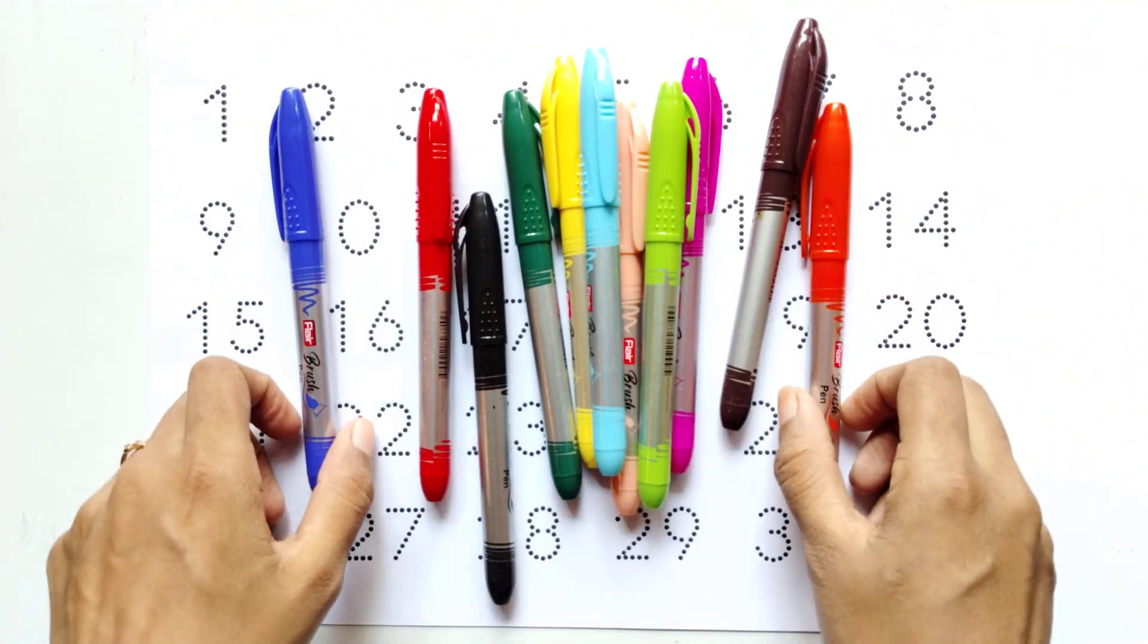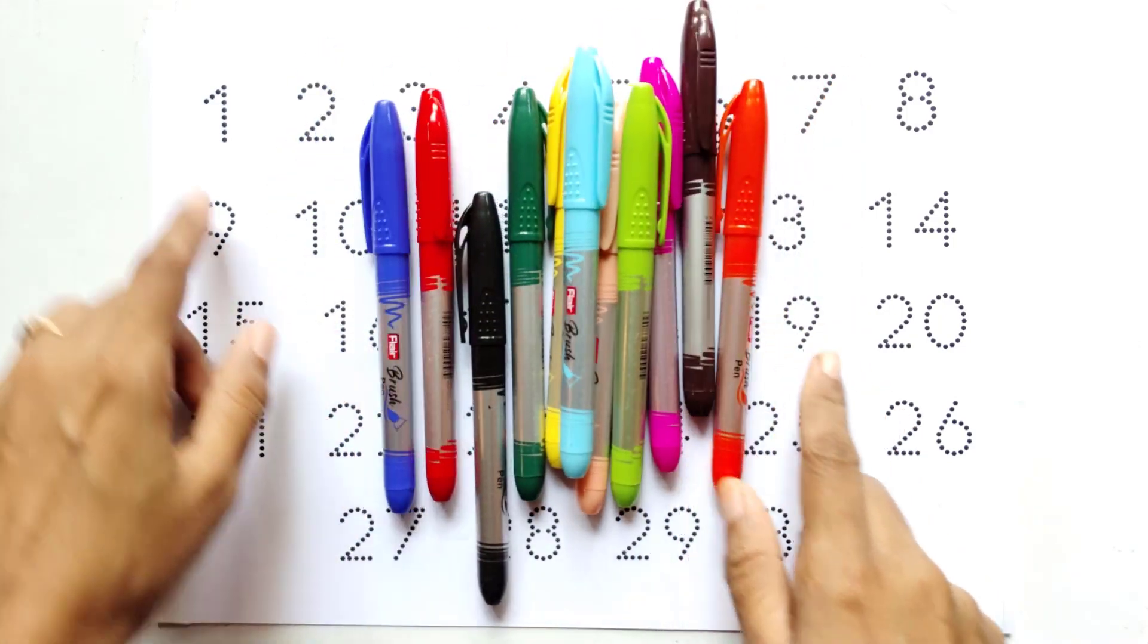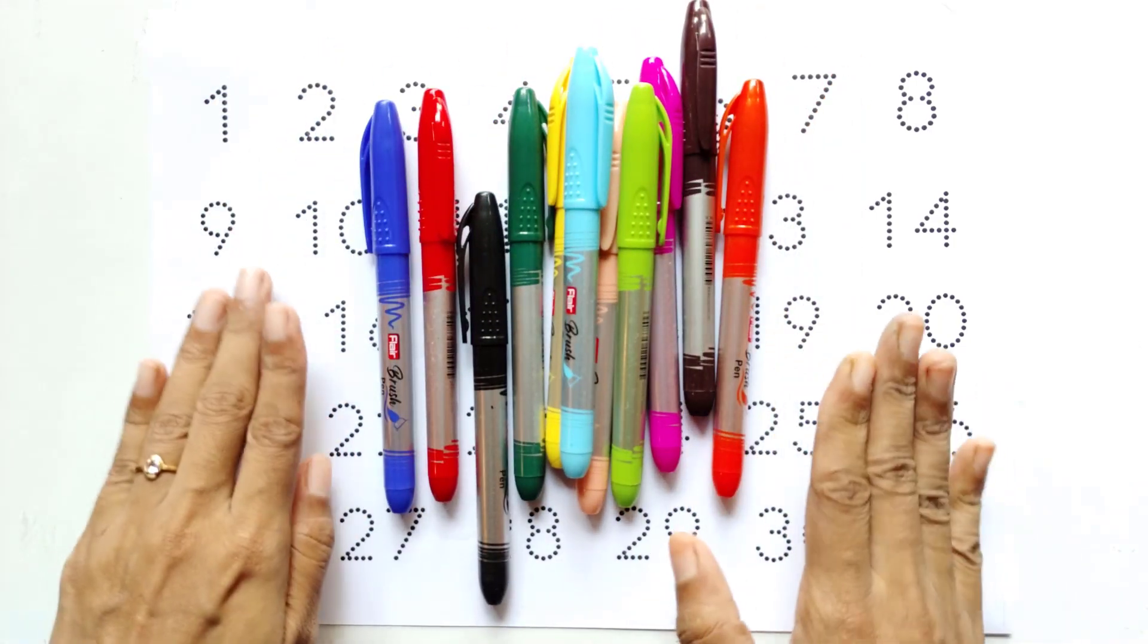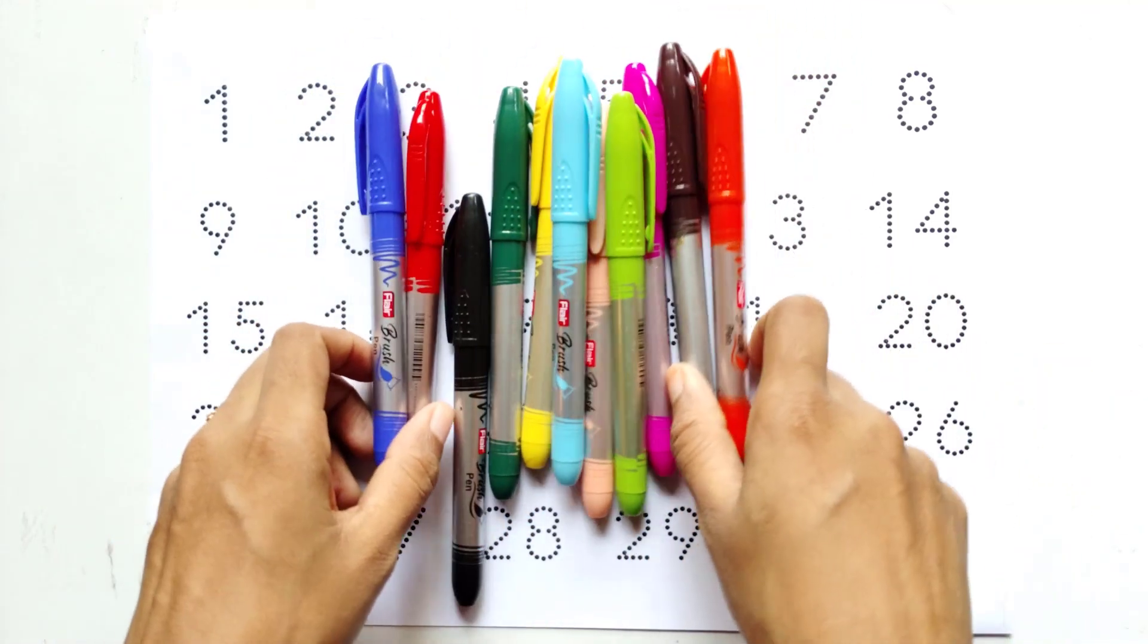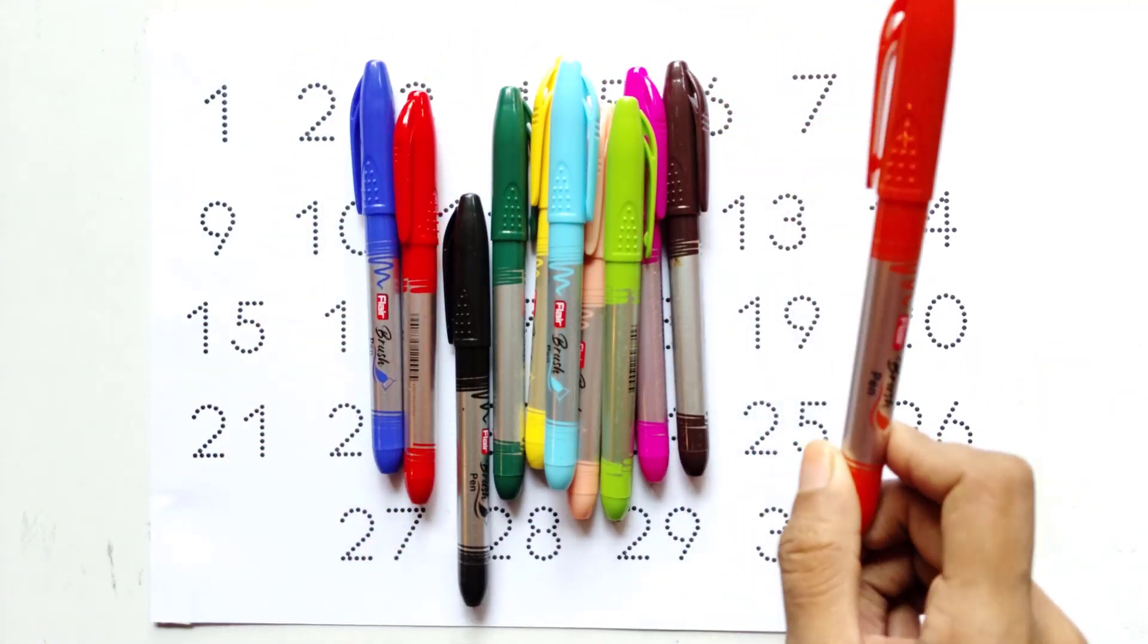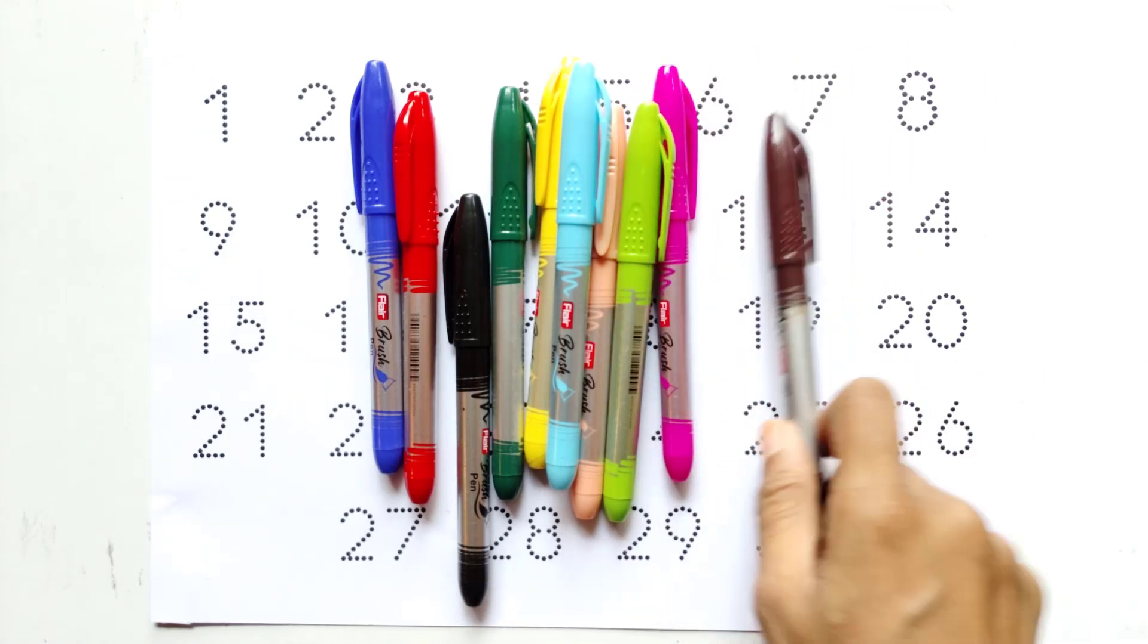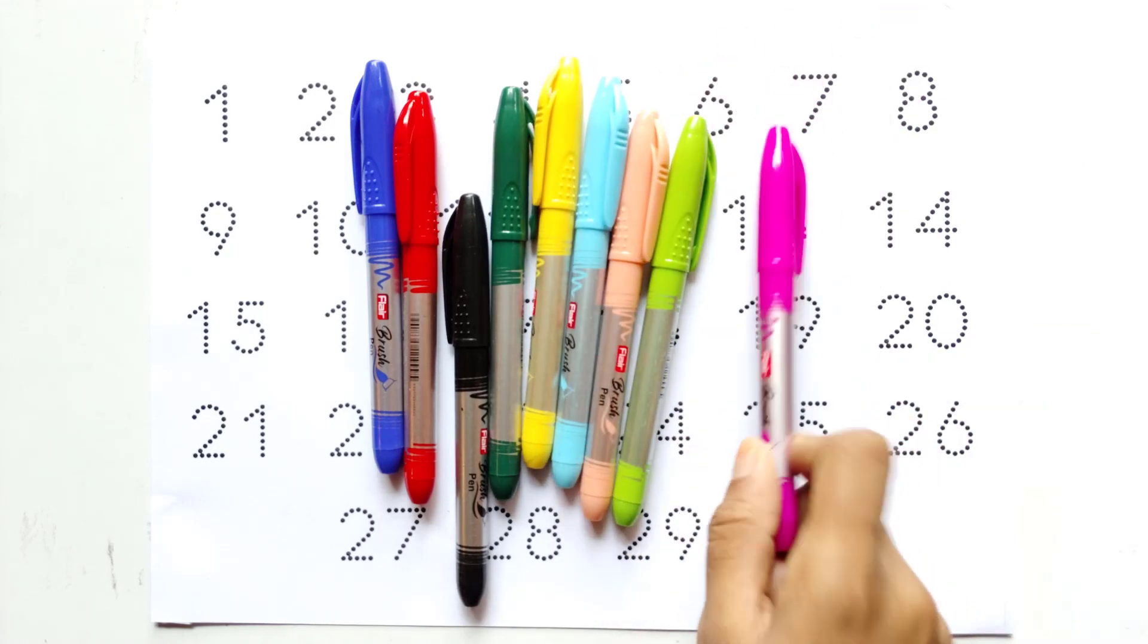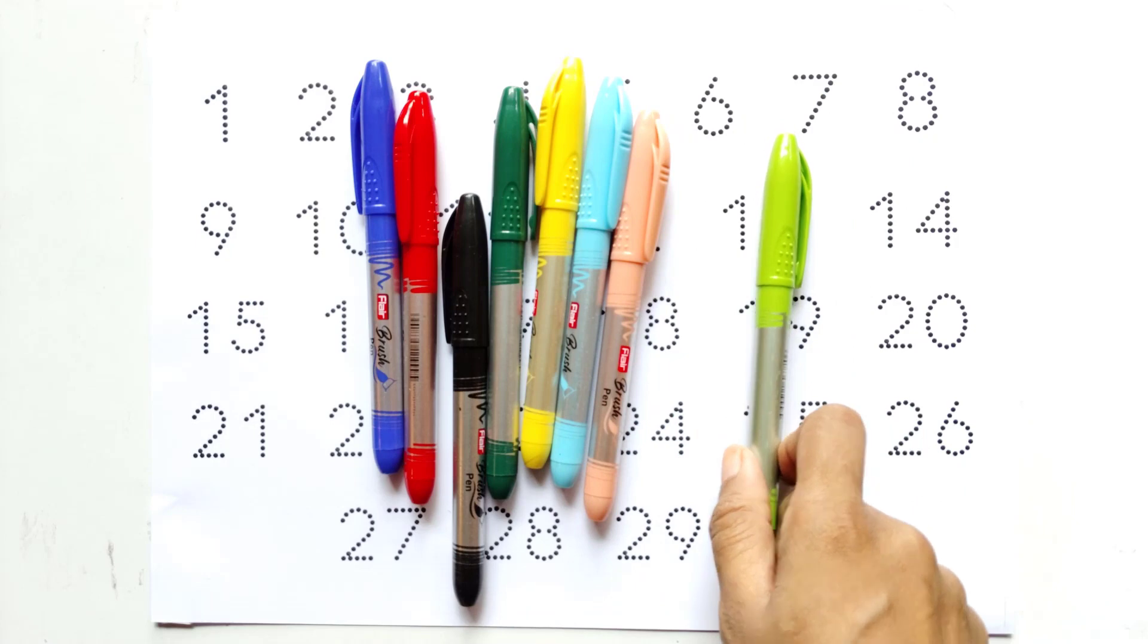Hello kids, today we will learn colors name and counting numbers. At first we will learn colors name. See with me colors name: red, brown, pink, parent, green.